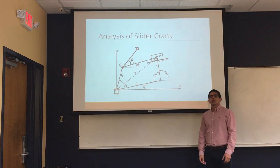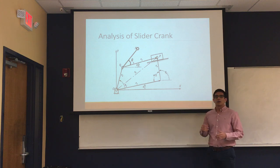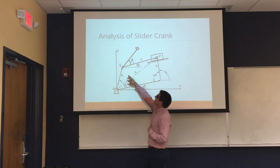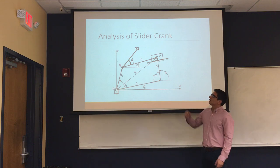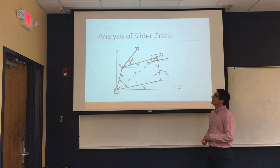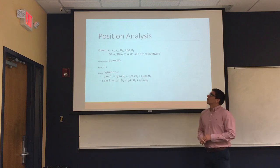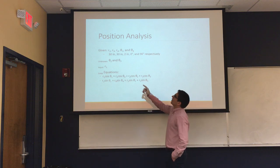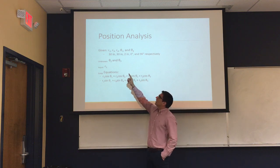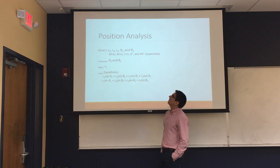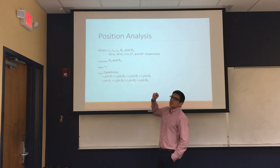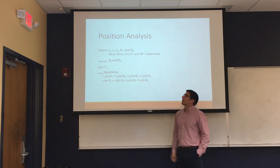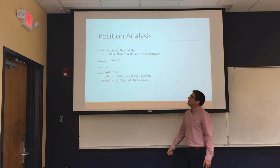The analysis of a slider crank is made of the analysis of the position of every link, as well as this coupler link QS. Also, it deals with the analysis of the velocities and the analysis of the accelerations. For the position analysis, we were given R2, R3, R4, theta1, and theta4, which were 30 inches, 30 inches, 2 inches, 0 degrees, and 90 degrees respectively. Our unknowns were theta2 and theta3.